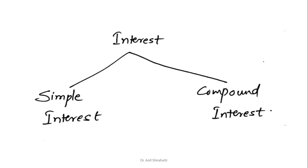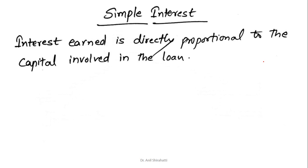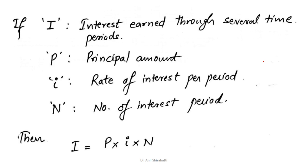There are two types of interest: one is simple interest and another is compound interest. Let's understand both one by one. Starting with simple interest — what is simple interest? Interest earned is directly proportional to the capital involved in the loan. What it means is interest is charged only on the total principal or capital involved. Let's understand the equation for how you can calculate the interest earned in the case of simple interest.